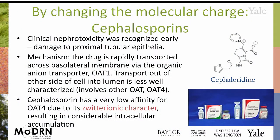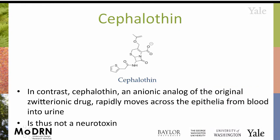Let's talk about a few examples of how we can think about these. The cephalosporins — most people have had exposure to this type of drug. Because of these charges, it has a very low affinity to be transported and a lot of intracellular accumulation, which is obviously something of concern. When you look at some of the alternatives that were designed, this moves rapidly across the epithelia to go from the blood into the urine.